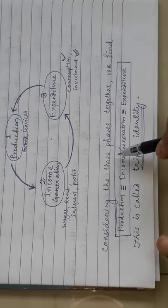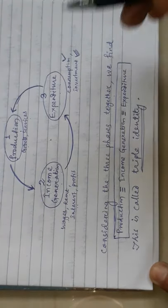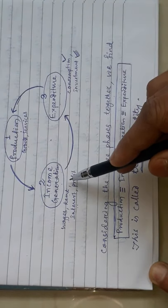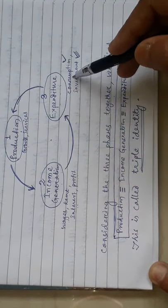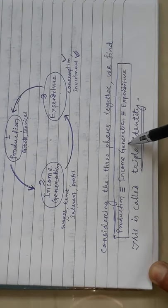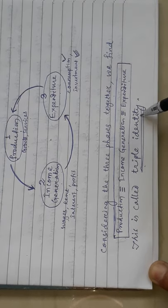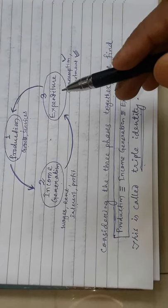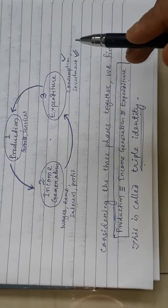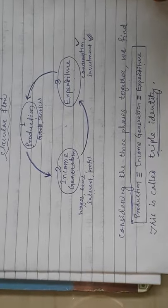Considering the three phases together, we find that production will be equal to income generation, which will be equal to expenditure. Jitna production hoga, utna hi income generation hoga aur utna hi expenditure hoga. This is called the triple identity.